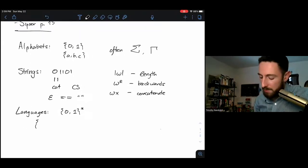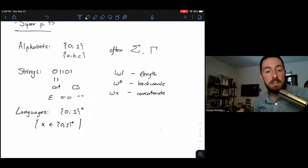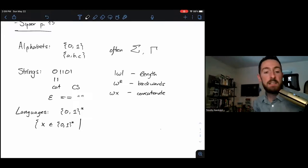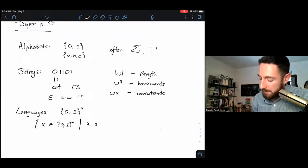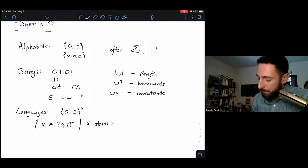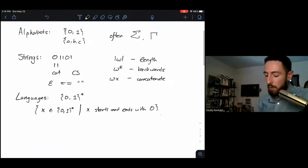You might also see languages defined using set notation. So if I write {x ∈ {0,1}* | ...}, that means x is a binary string. I might write a vertical slash to mean 'such that', and then follow it up with a condition. So all the strings x in {0,1}* that meet this condition are in my set and in the language I'm defining. For example, maybe x starts and ends with a zero.